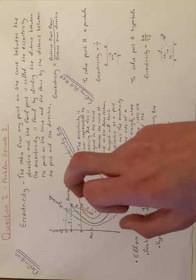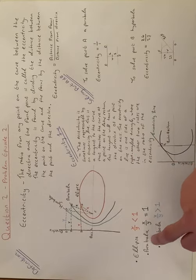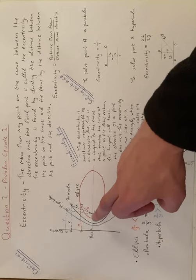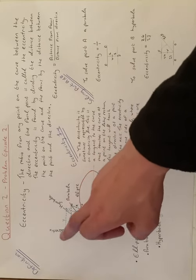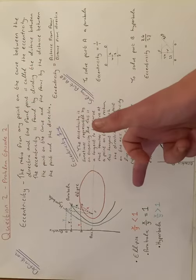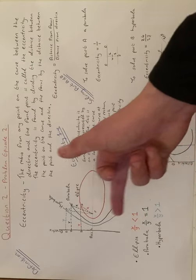For parabola, x over y is equal to one, so it'll be the same distance from F to P as it will be from P to D - your point to your directrix. That's how you know it's a parabola.